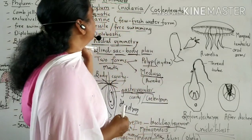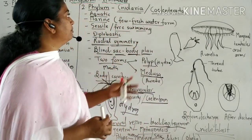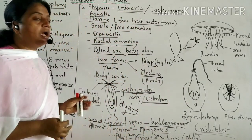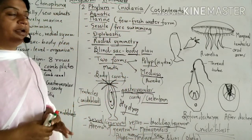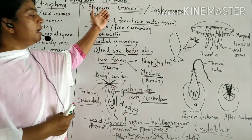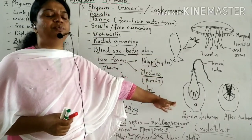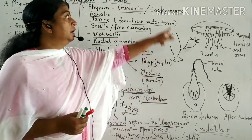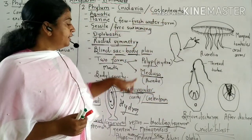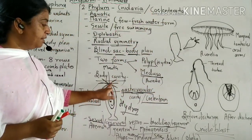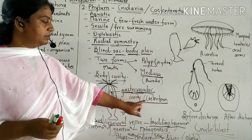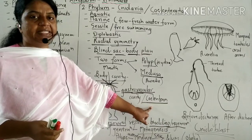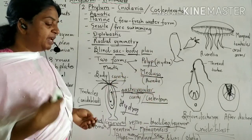This phylum is called Cnidaria because of cnidoblasts, and Coelenterata because the gastrovascular cavity is called the coelenteron.